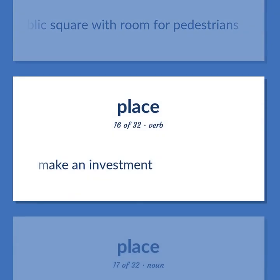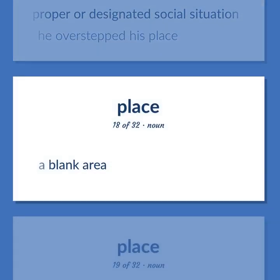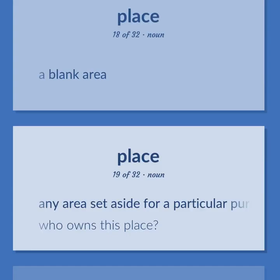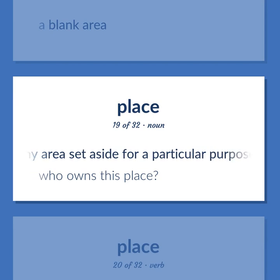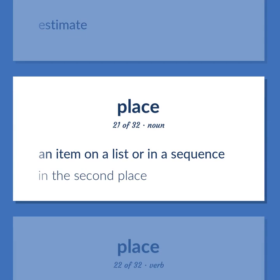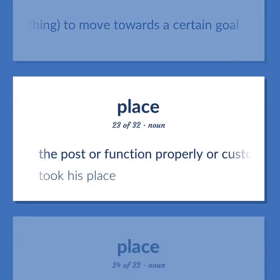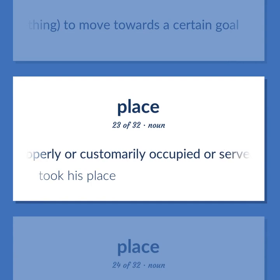Make an investment. Proper or designated social situation. He overstepped his place. A blank area. Any area set aside for a particular purpose. Who owns this place? Estimate. An item on a list or in a sequence. In the second place. Intend; to move towards a certain goal. The post or function properly or customarily occupied or served by another. Took his place.